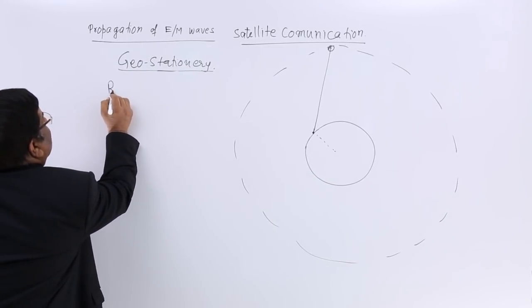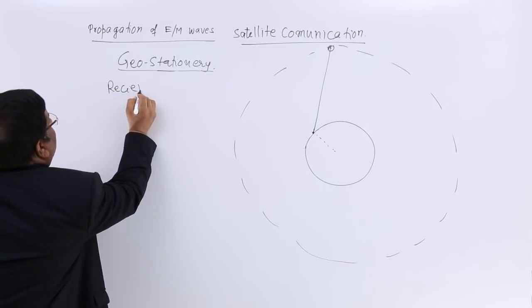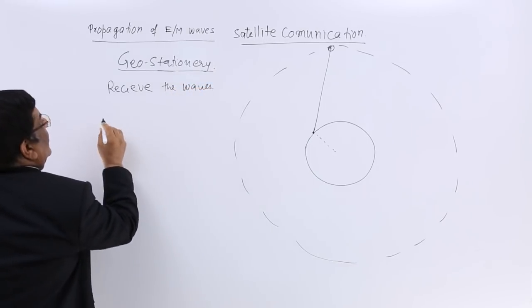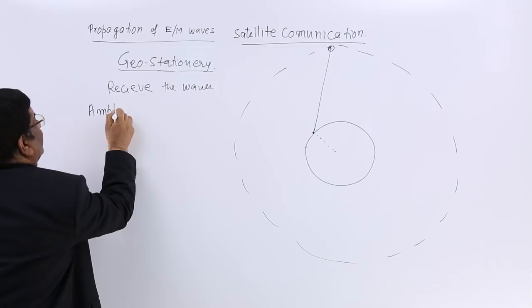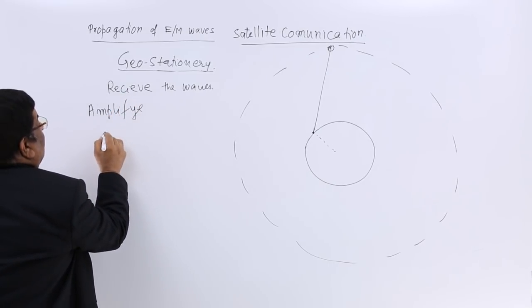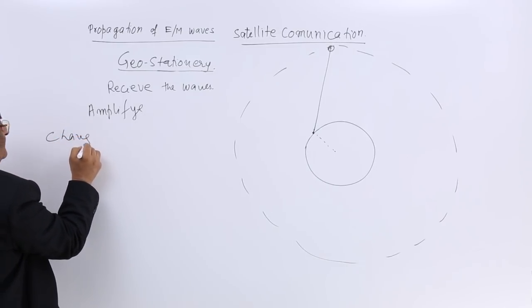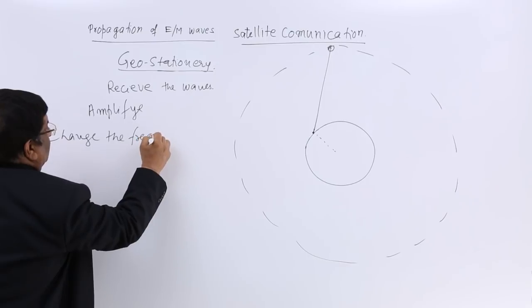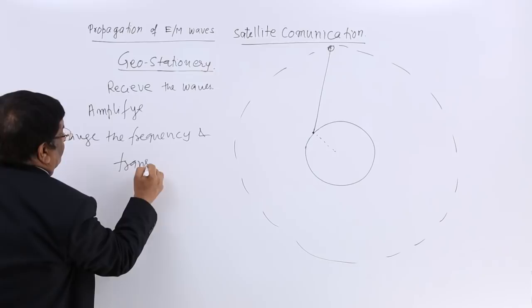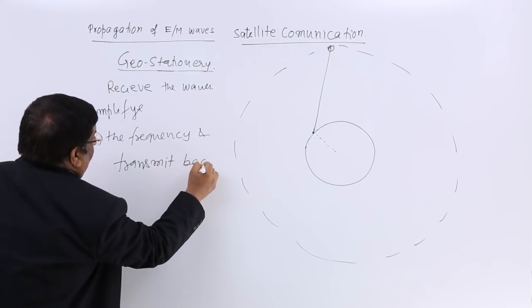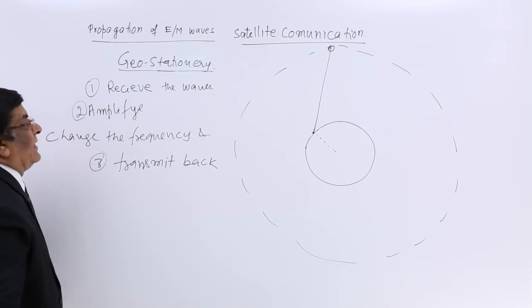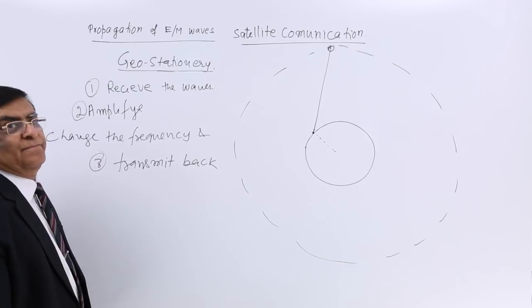It has got a receiver, so that it will receive the waves. Then, it has got an amplifier, so it will amplify. Then, it will change the frequency, change the frequency and transmit back. So, it is having action 1, 2, 3 and in between, it will change the frequency.